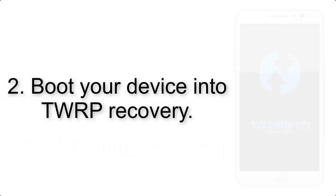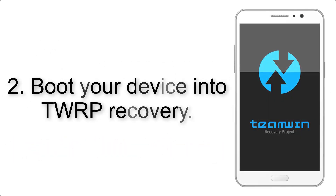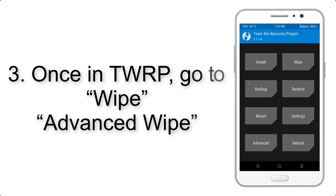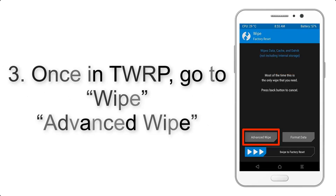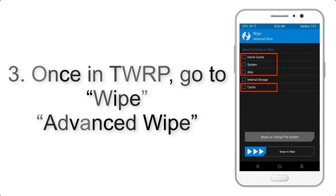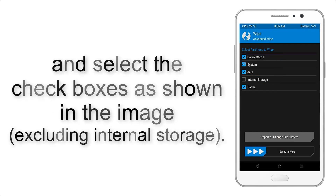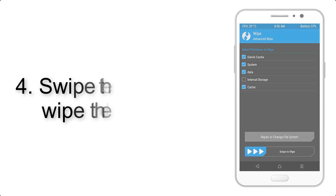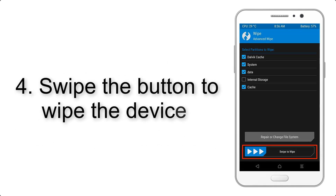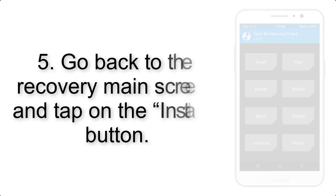Step 2: Boot your device into TWRP recovery. Once in TWRP, click on Wipe, then Advanced Wipe, and select the checkboxes as shown in the image, excluding internal storage. Step 4: Swipe the button to wipe the device.